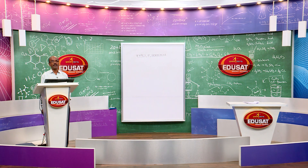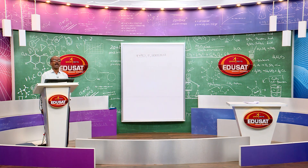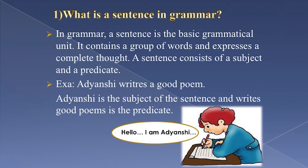Before discussing types of sentences, we should first understand what a sentence is in grammar. If we understand what a sentence is, then it will be easy to understand the different types. In grammar, a sentence is the basic grammatical unit. It contains a group of words and expresses a complete thought. A sentence is a group of words having meaning, and it consists of a subject and a predicate.